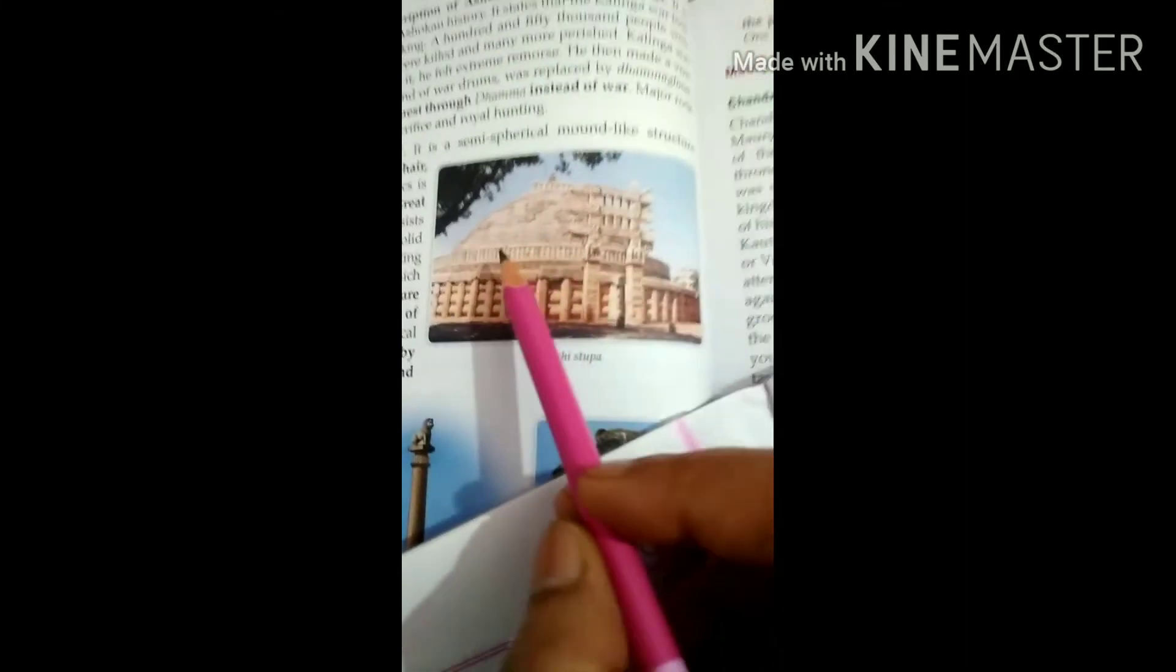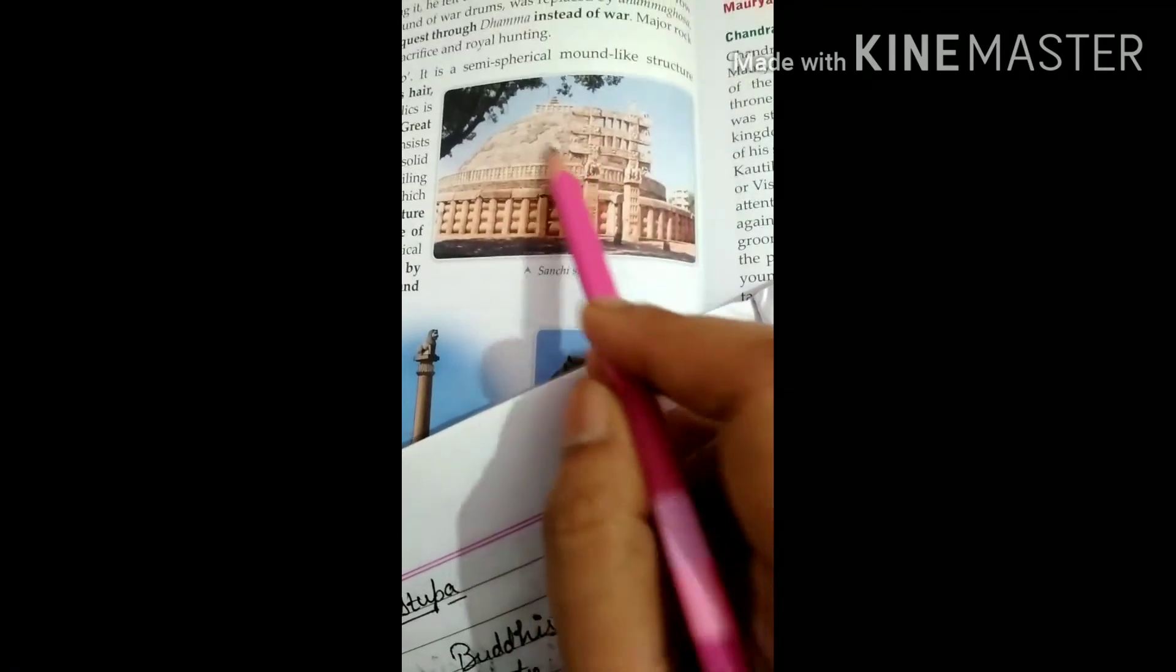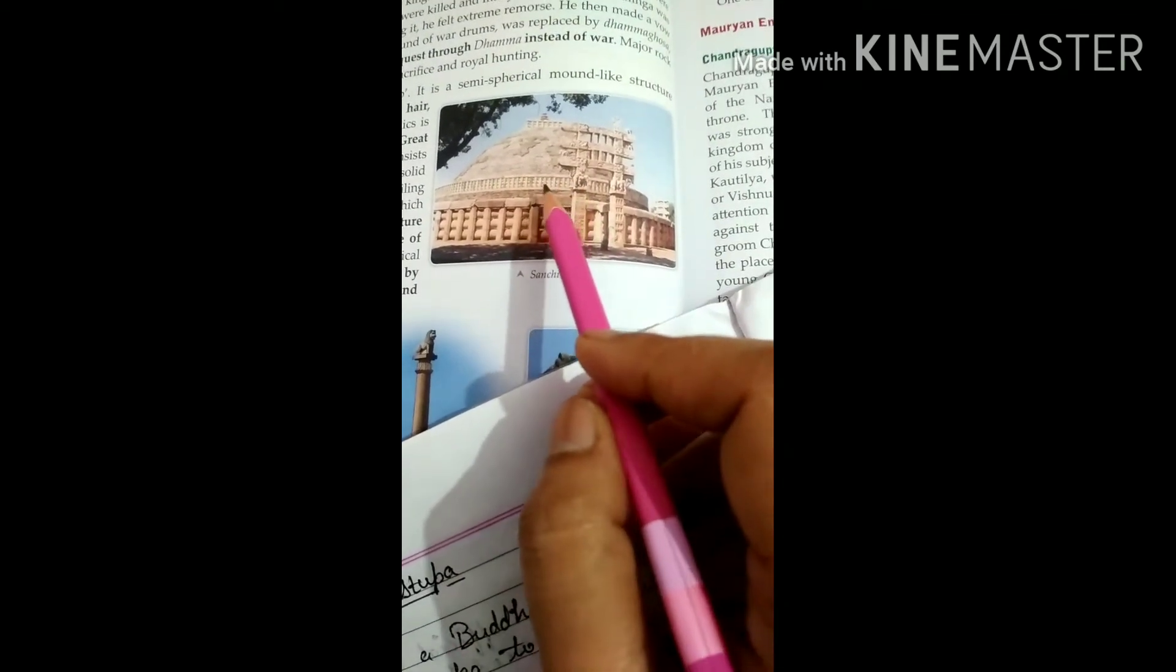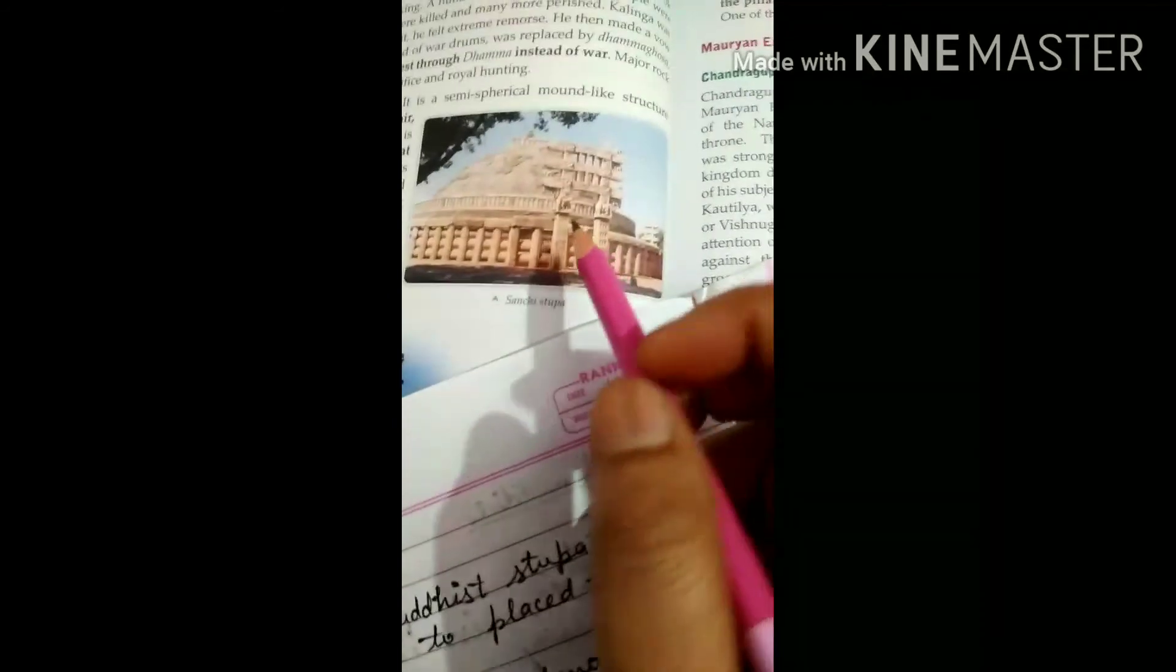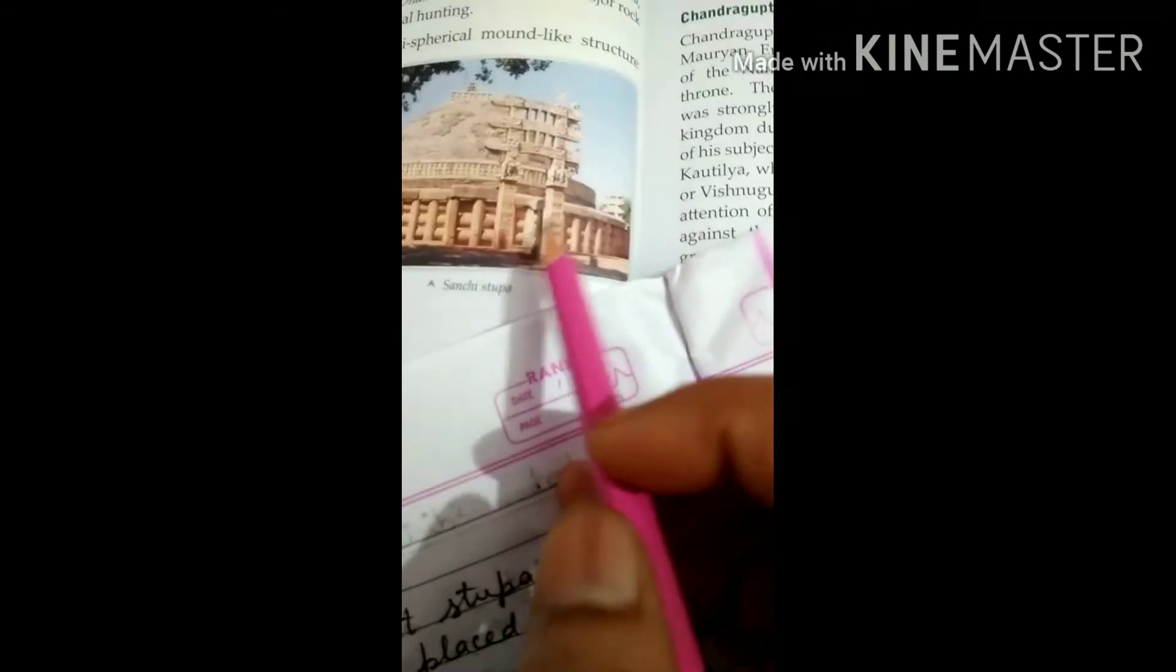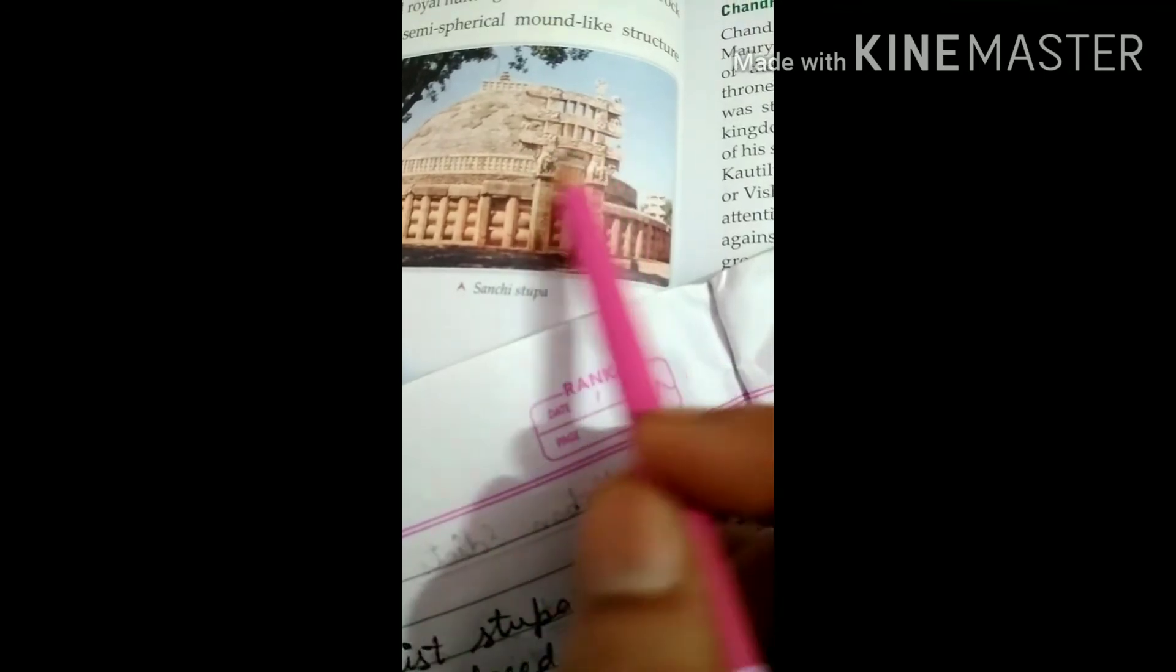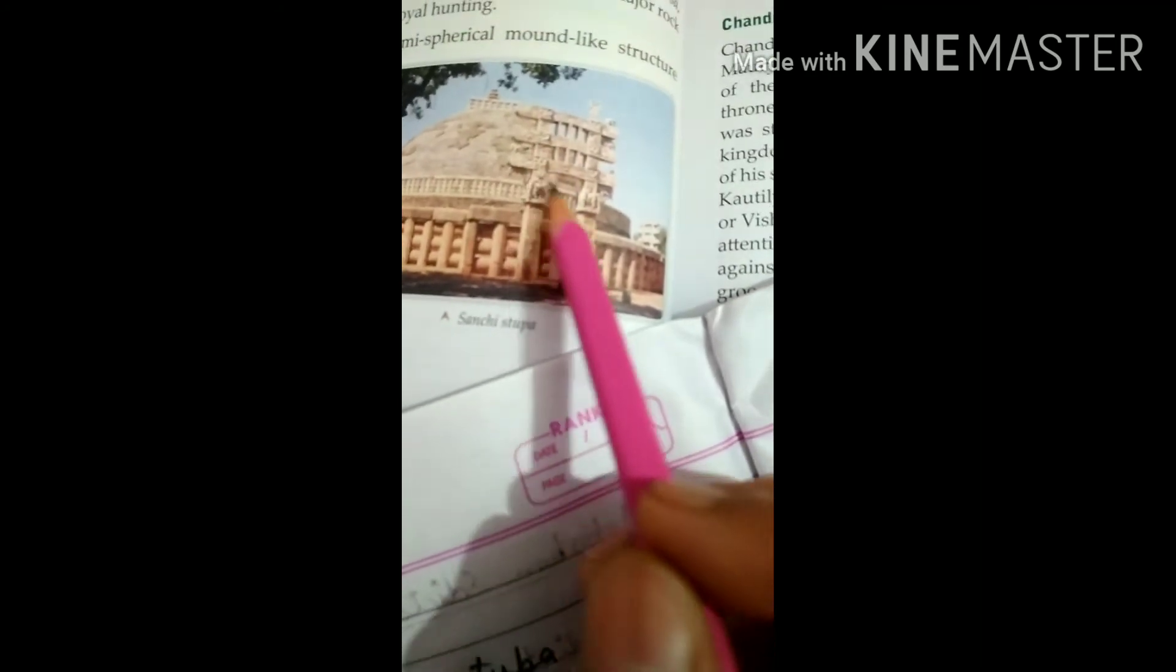Now look at Sanchi Stupa. What is this? Stupa is actually semi-circular, semi-spherical building. Stupas are built up to preserve the Buddha's relics. This is a gateway and there are some animal figures engraved on it.